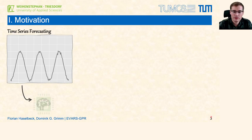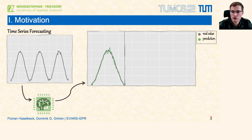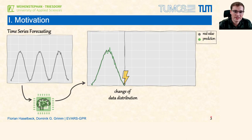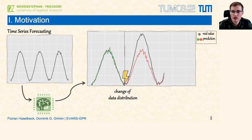Once our prediction model is ready the online phase starts, so at every time step we predict the future values. However, changes of the system behavior over time are a typical issue in time series forecasting. This may be caused by internal as well as external influences. For instance, recently many time series forecasting systems were affected by the SARS-CoV-2 pandemic. And as our prediction model is based on the previous data distribution, its predictions might not be useful anymore — they could even cause damage such as financial loss.